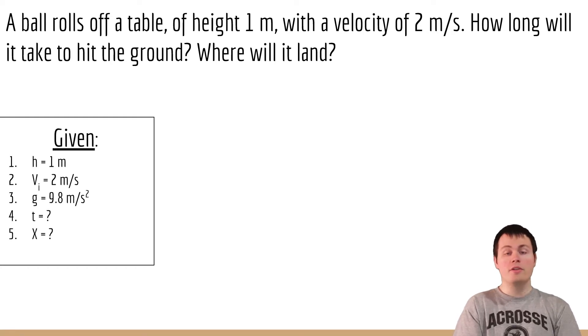So in this case we know that it's coming off from a height of one meter down to the ground and we know it has an initial velocity which should all be horizontal of two meters per second and we know there's gravity. We want to know the time and the distance that it will travel while it's in the air.